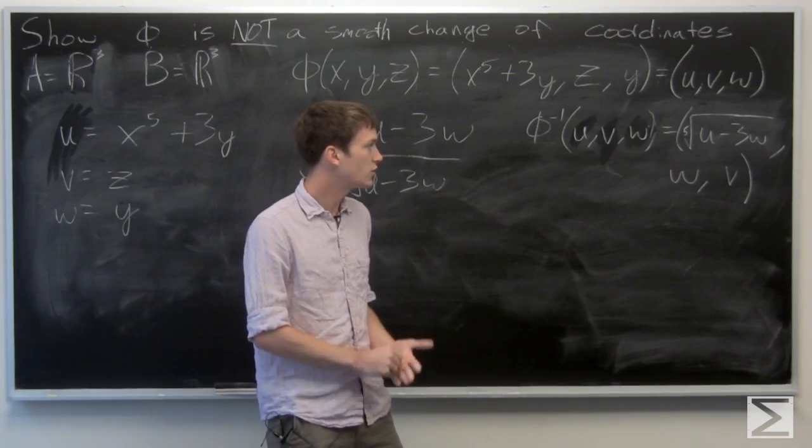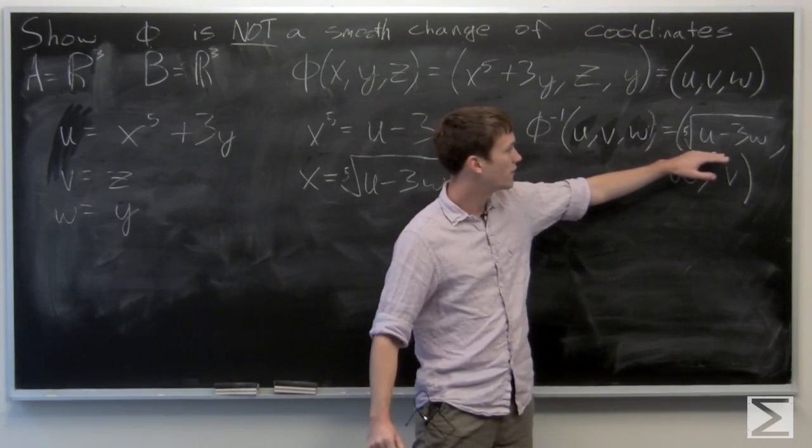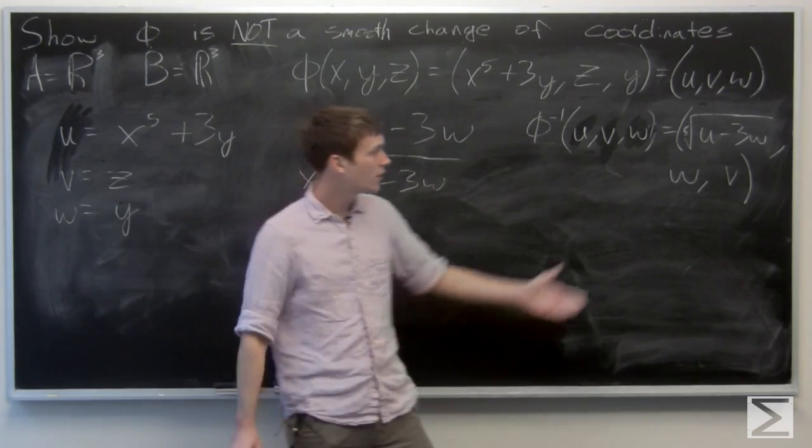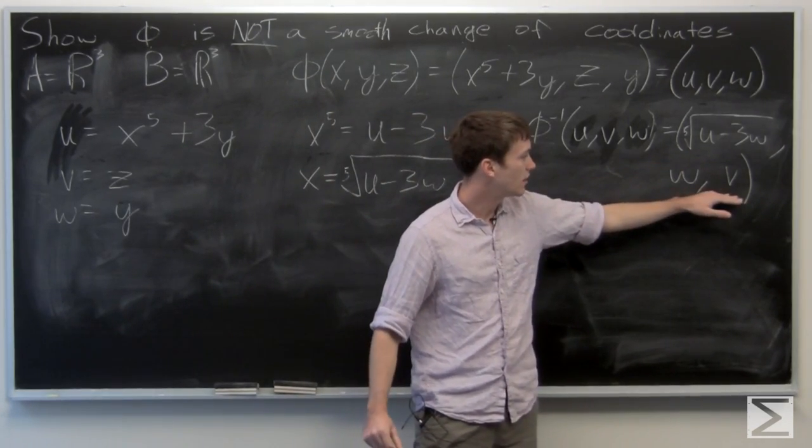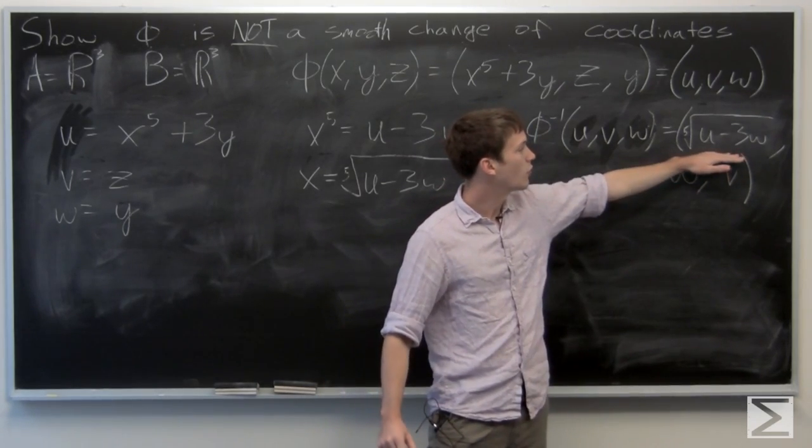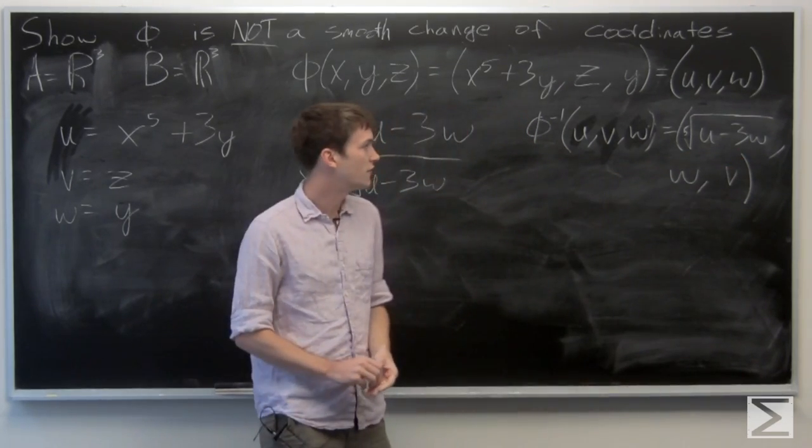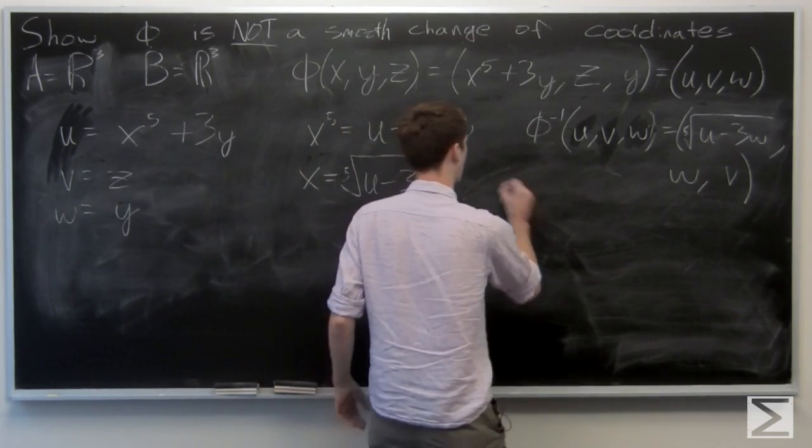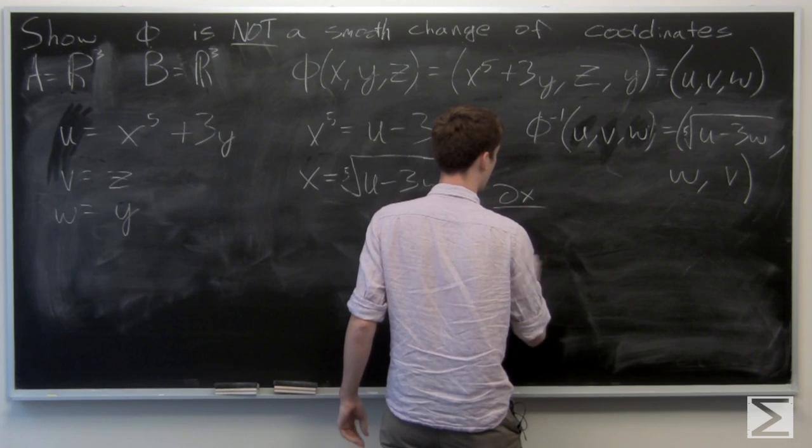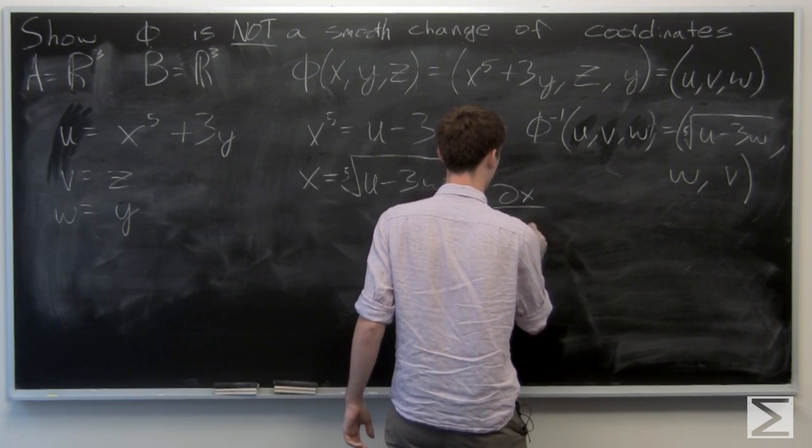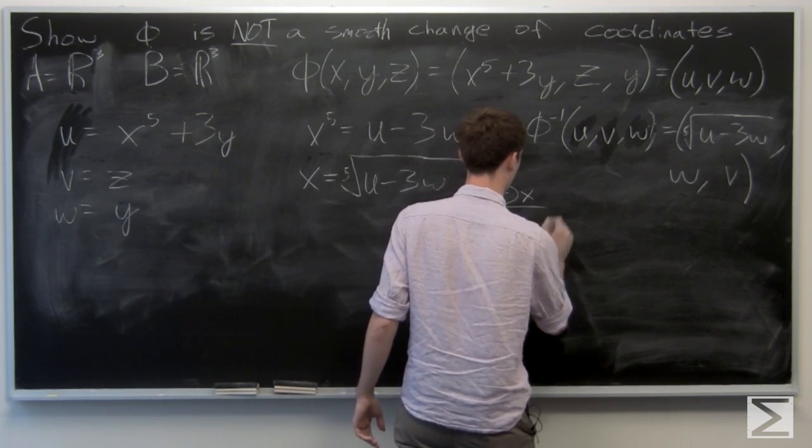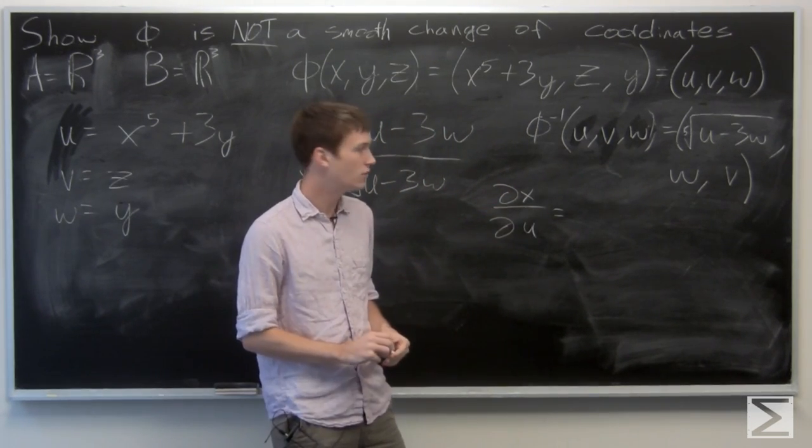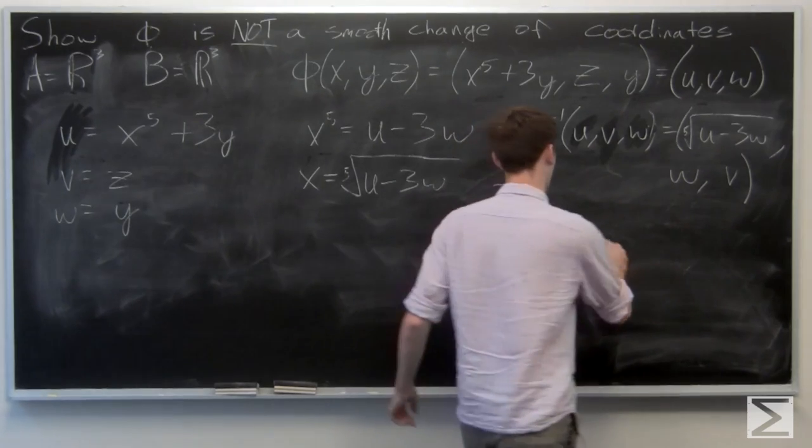So we see that phi is a bijection, but we want phi inverse to be infinitely differentiable. We know that v and w will be, but we're not so sure about the fifth root of u minus 3w, so we'll take the partial derivative of x with respect to u.